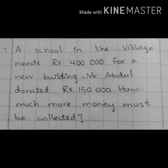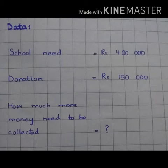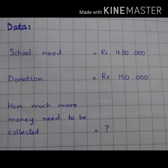So now we need to find out how much money should we need to find out. Data. So now students, we will write one by one. School need is equal to Rs. 400,000. Second statement: donation is equal to Rs. 150,000.